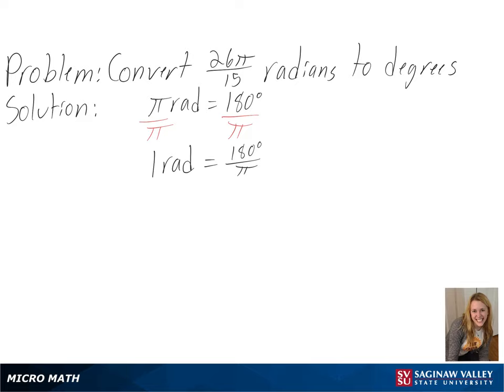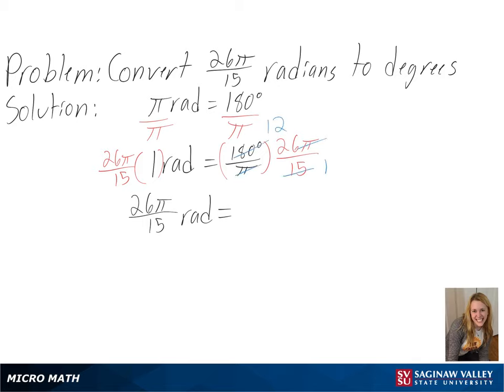Then we can multiply both sides by 26 pi over 15 to convert to 26 pi over 15 radians. After cross-canceling and simplifying, we will get 12 times 26, or 312 degrees, as our final answer.